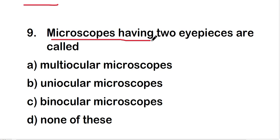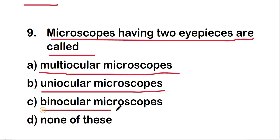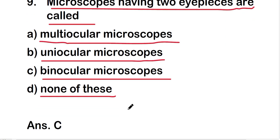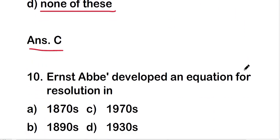Microscopes having two eyepieces are called: multi-ocular microscope, uni-ocular microscope, binocular microscope, or none of these? The right answer is option C — binocular microscope. Microscopes having two eyepieces are called binocular microscopes.